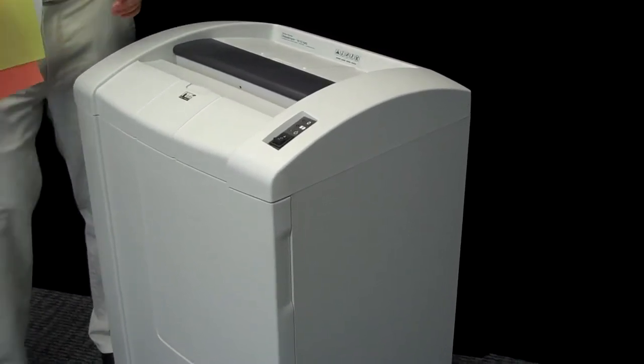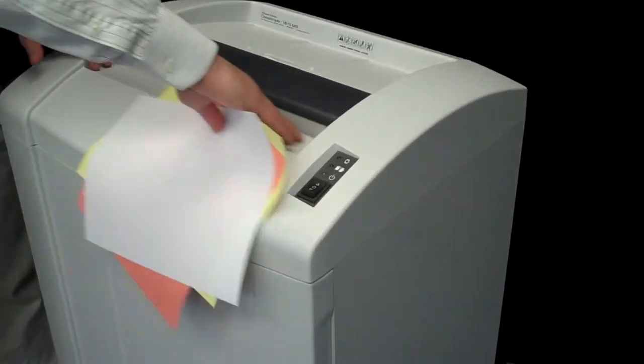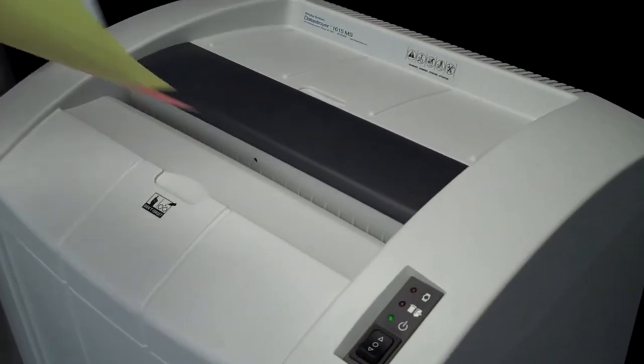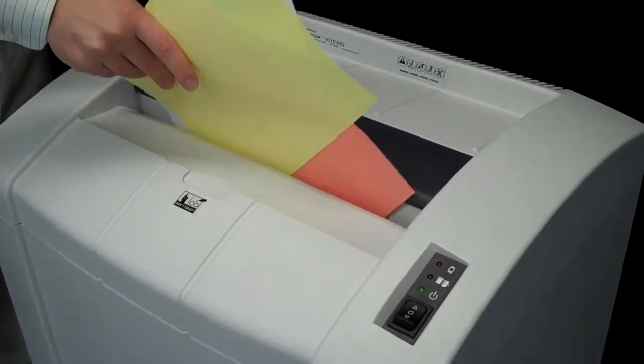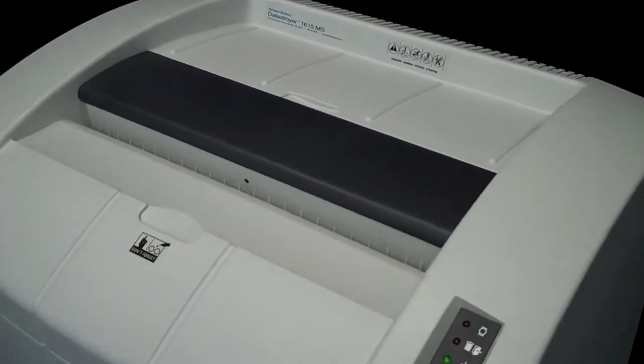If you come in closer though, I'll show you my favorite part. It's a wide 16 inch forgiving throat. We can put paper in forwards, backwards, sideways, diagonal, however we want to. And look at how quickly it disappears.